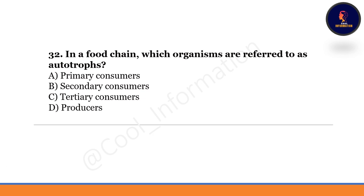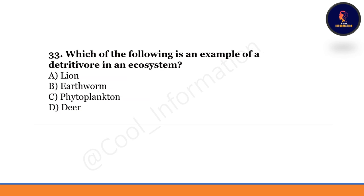In a food chain, which organisms are referred to as autotrophs? Producers are known as autotrophs — very fundamental question. Option D will be correct here. Do not confuse primary consumers with producers; producers are referred to as autotrophs.